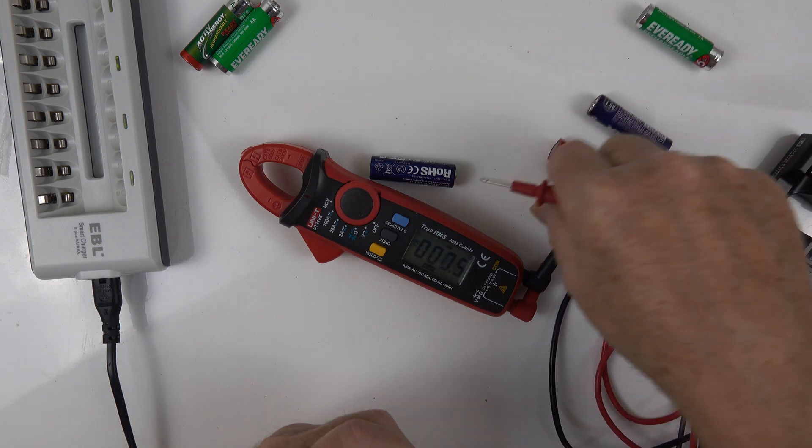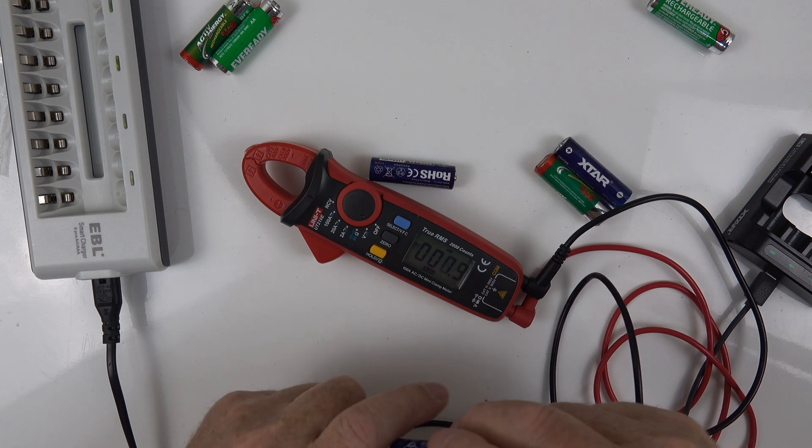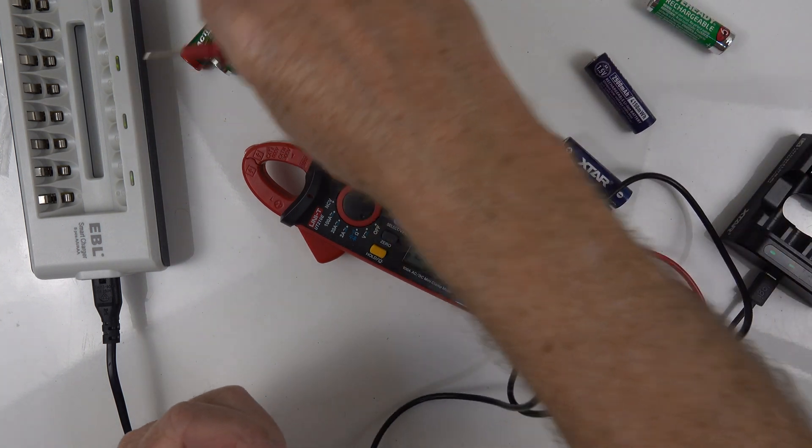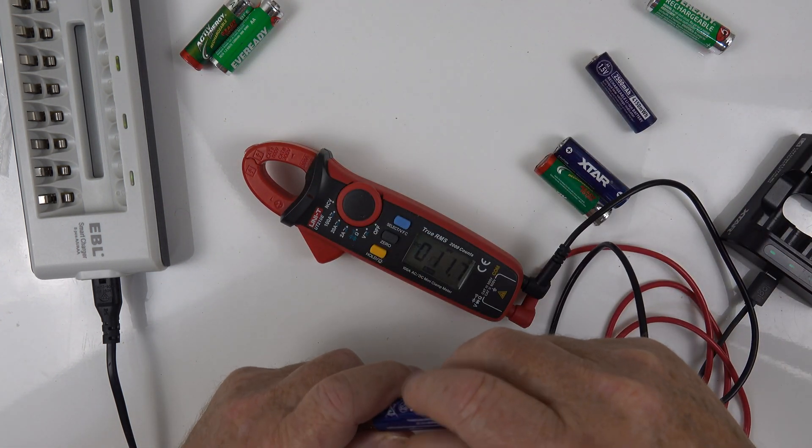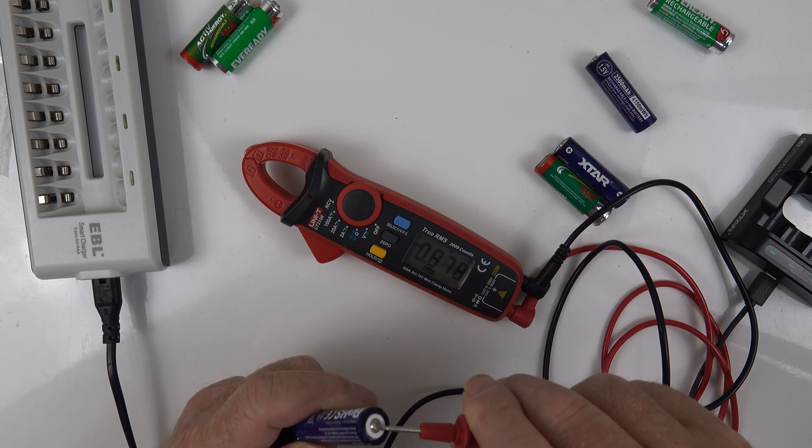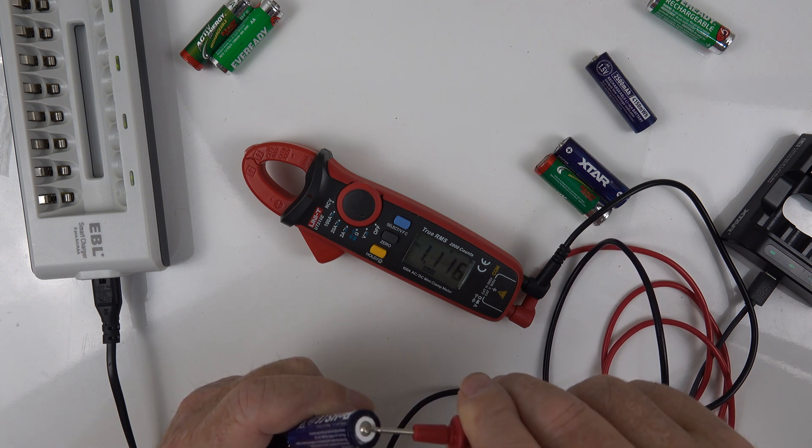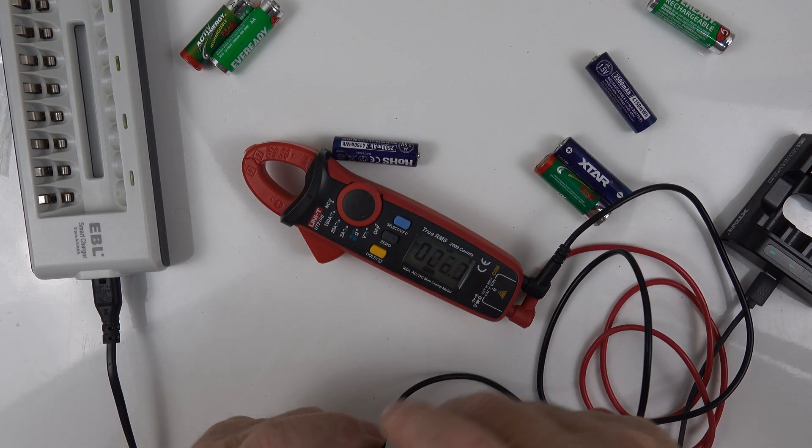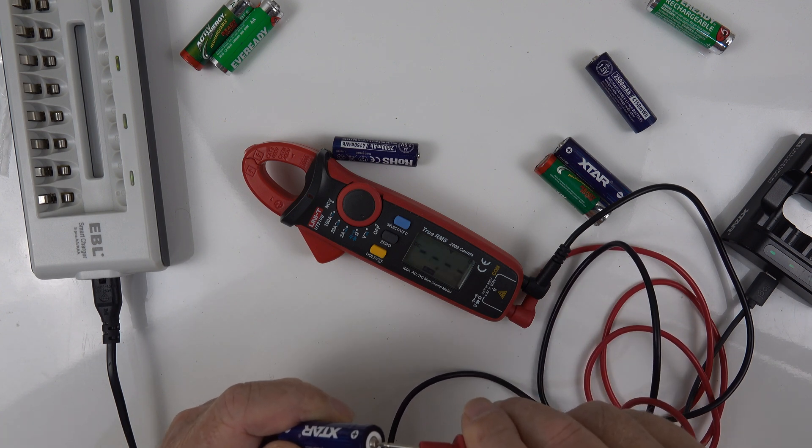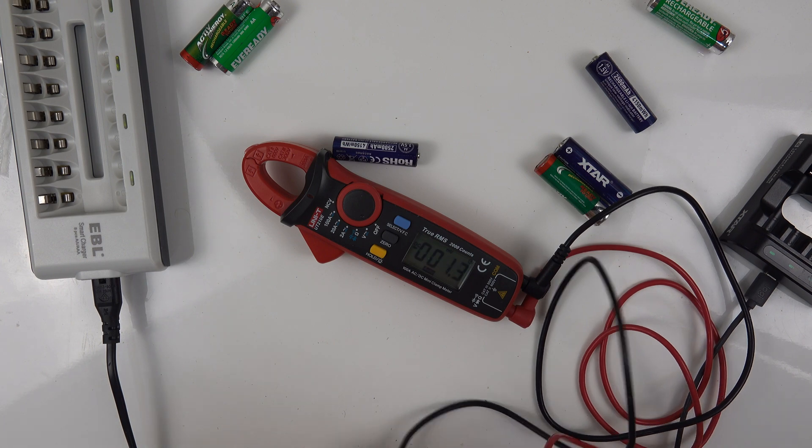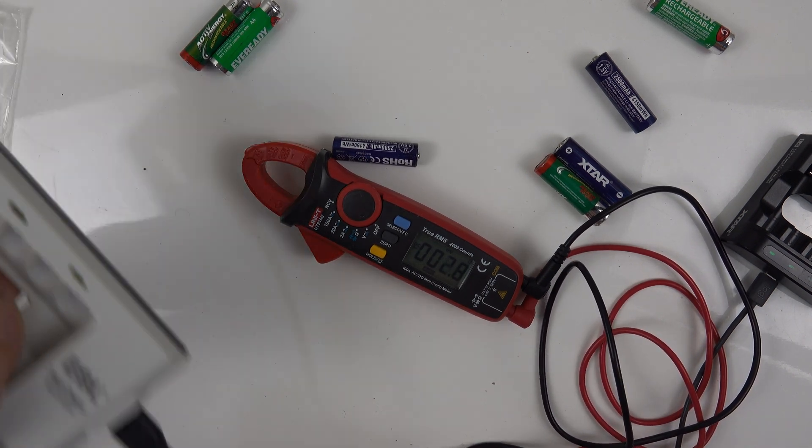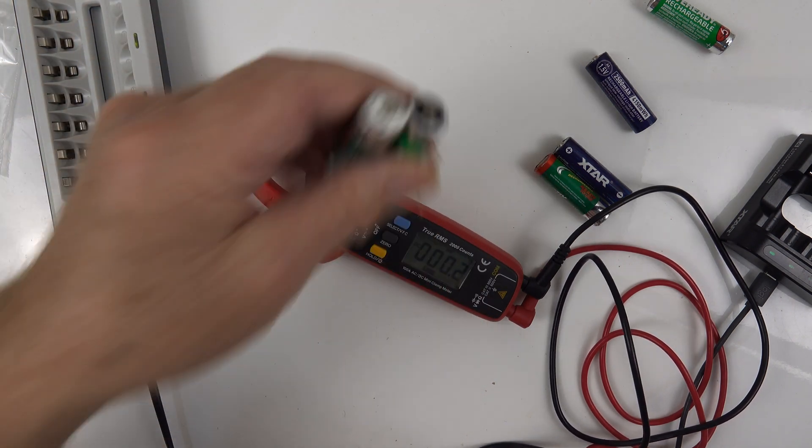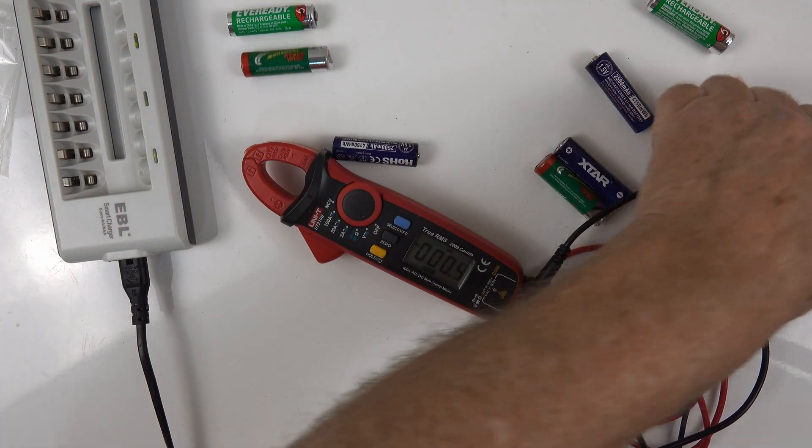1.516. 1.518. Now for the Xtar one, let's see what we've got. We've got 1.16, 1.16, so basically it hasn't charged, hasn't put any charge at all into the batteries, which is not surprising. Same thing again. So the EBL for lithium-ion batteries, forget it, waste of time.